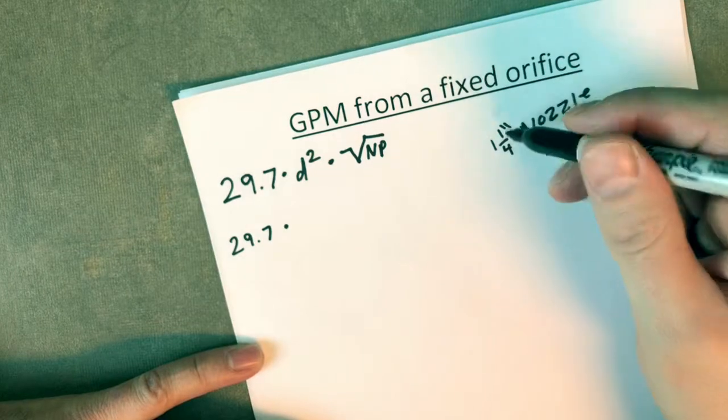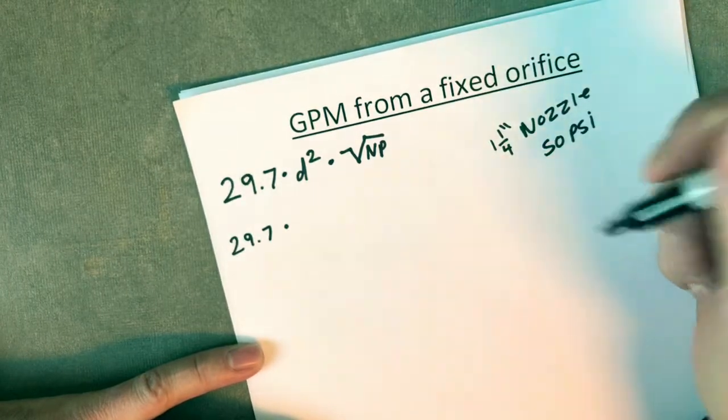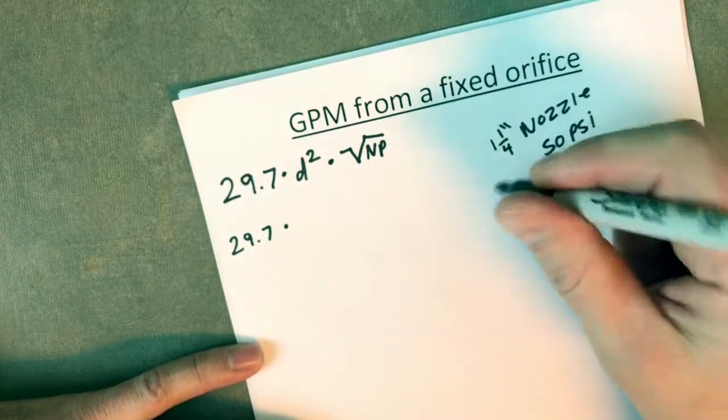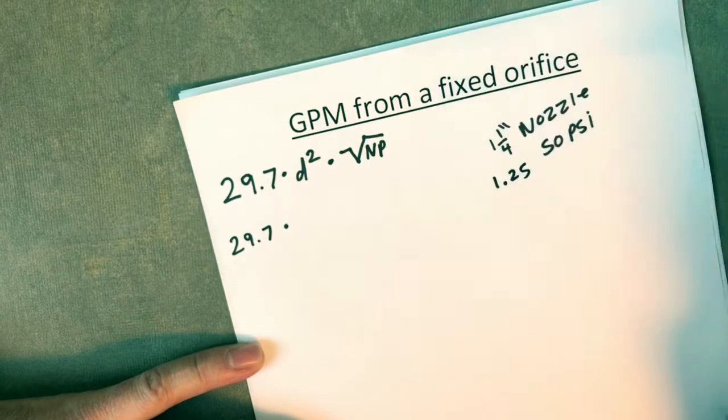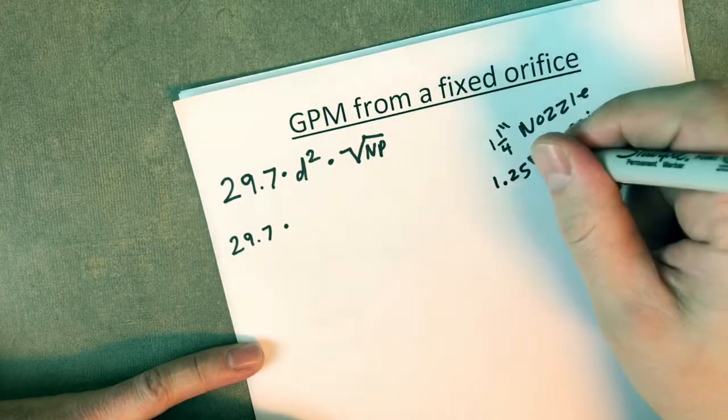Let's figure out what that's going to be. What we need to do is convert that inch and a quarter fraction into a decimal. That's going to be 1.25, right? 1.25 inches.